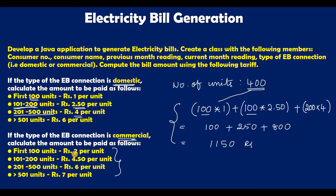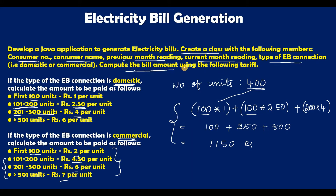The same procedure has to be followed for commercial, but with a different set of rules. For commercial, for the first 100 units it is Rs 2. The remaining slabs have their own costs. The question asks us to create a class with members: consumer number, consumer name, previous month reading, current month reading, and type of electricity bill connection — whether domestic or commercial. Based on all these, we calculate the bill amount.